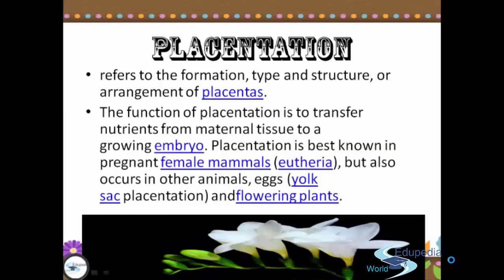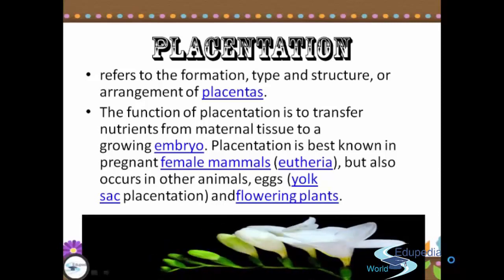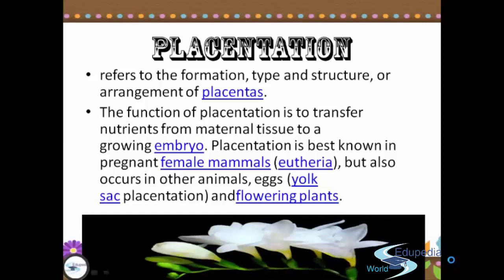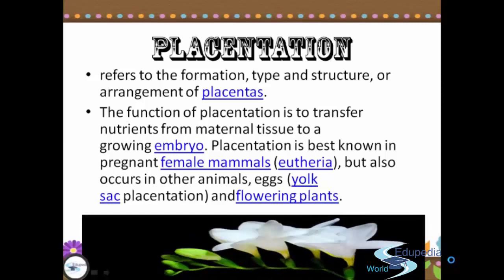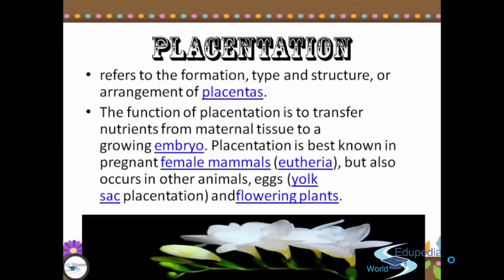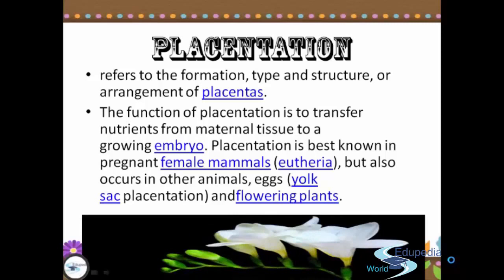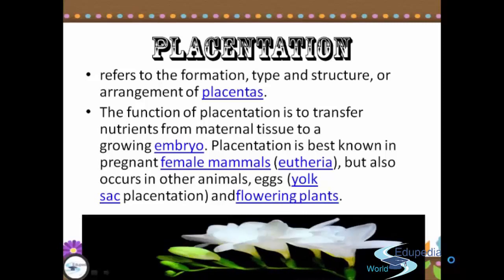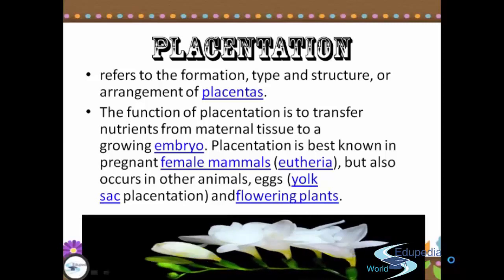The function of placentation is to transfer nutrients from maternal tissue to a growing embryo. Placentation is best known in pregnant female mammals, but also occurs in other animals, egg yolk placentation, and also includes flowering plants. But this time, we're going to focus on the flowering plants' placentation.